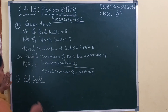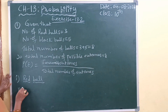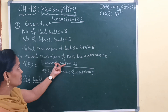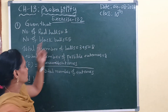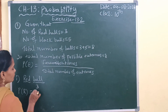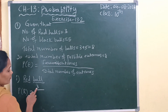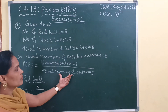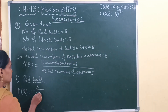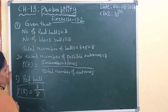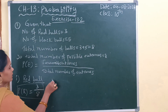Now, probability of getting a red ball. Favorable outcomes for red ball — how many red balls? 3. So, possibility of getting red balls is number of red balls divided by total number of outcomes: 3 by 8. So, 3 by 8 is the answer for the probability of getting a red ball.